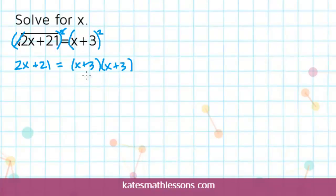Squaring something just means multiplying it by itself. And when I multiply two binomials, I need to distribute the x first, that would give me x squared plus 3x. And then distribute the 3, that would give me another 3x and a plus 9. So on the right hand side I actually have x squared plus 6x plus 9.